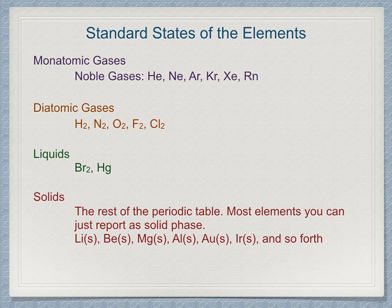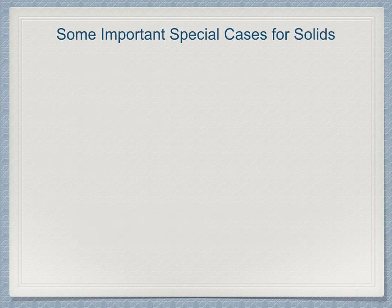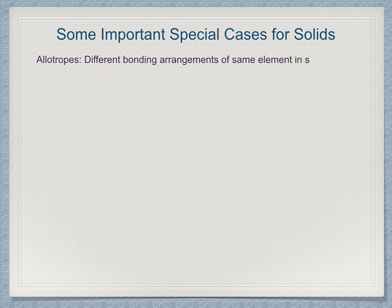There are a number of solids which present some special cases worth memorizing. Solids generally exist in several different crystalline forms, called allotropes. The bonding is arranged differently, and many properties are different, but they are all just the pure elemental atoms in the substance. One of the allotropes for each element is the most stable and is the reference state for that solid element.